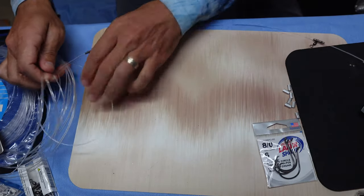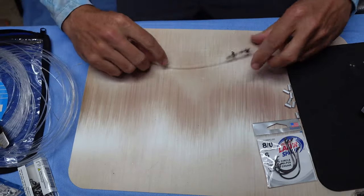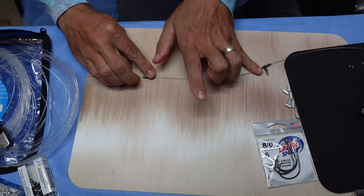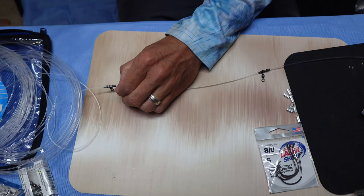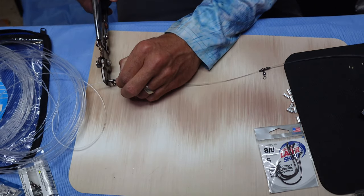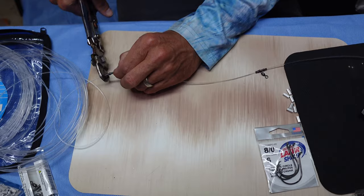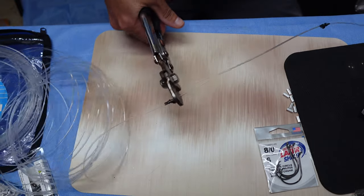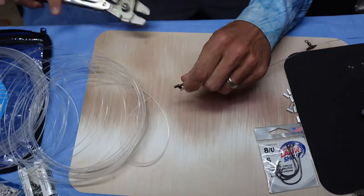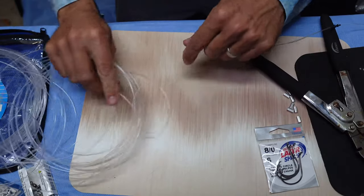Crimp one, crimp two. Repeat that process from pinky to thumb for your length. Put your finger here so it doesn't slide up or down. Crimp one, crimp two.